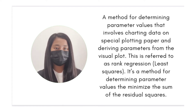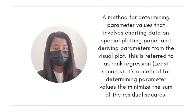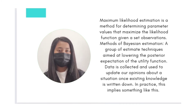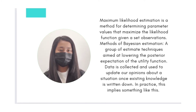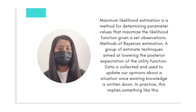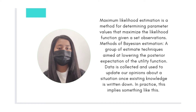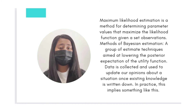It's a method for determining parameter values that minimize the sum of the residual squares. Maximum likelihood estimation is a method for determining parameter values that maximize the likelihood function given a set of observations. Methods of Bayesian estimation are a group of estimation techniques aimed at lowering the posterior expectation of the utility function.